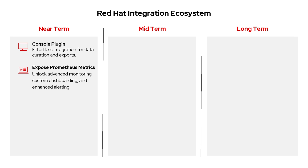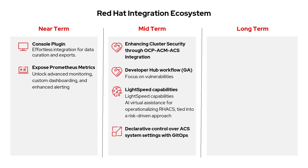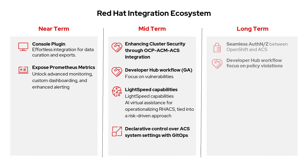In the midterm, we're aiming for deeper portfolio integration and more advanced capabilities. This includes strengthening cluster security through OCP, ACM, and ACS integration, moving the developer hub workflow to GA with a focus on vulnerabilities, and exploring Lightspeed AI capabilities to help operationalize ACS. We'll also add declarative control of ACS settings with GitOps so users can manage configuration as code.